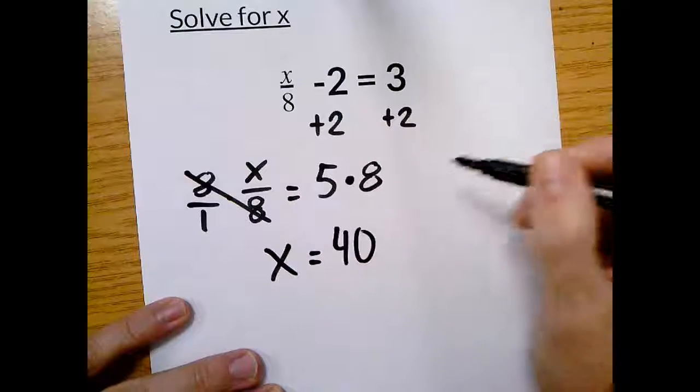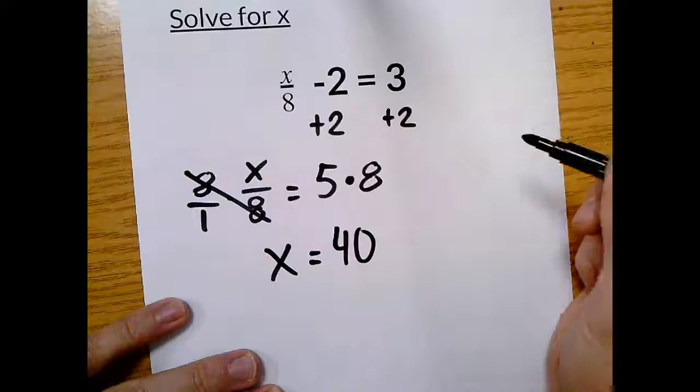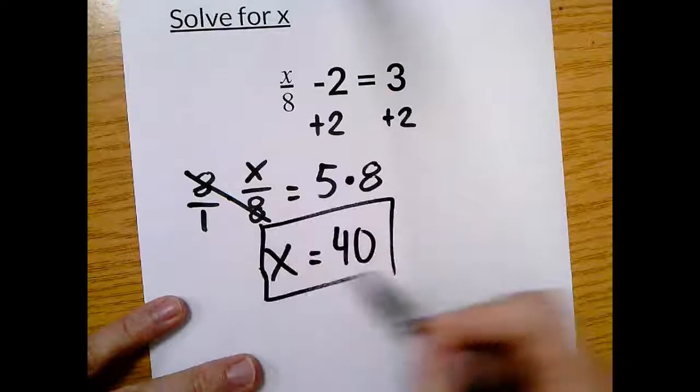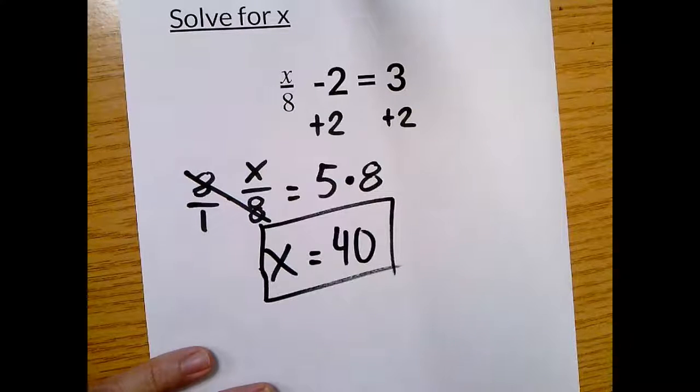You can also count up by 8 5 times if you wanted because multiplying is commutative. All right. Neither here nor there. x equals 40. You've done it. Good job.